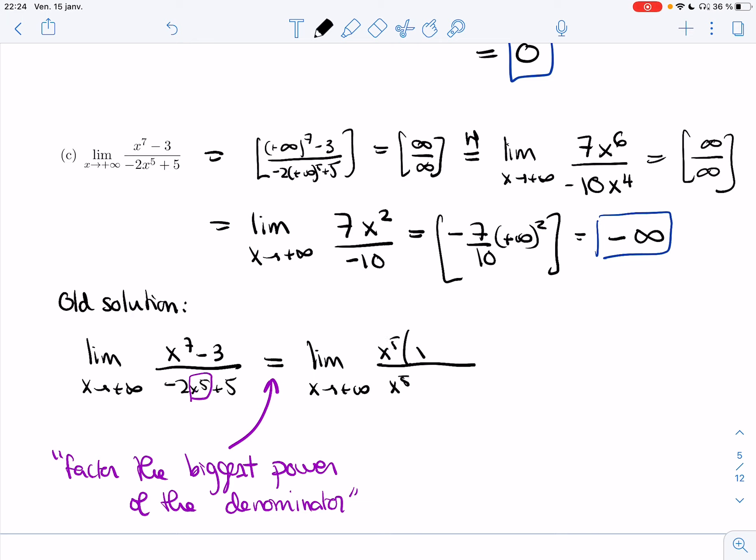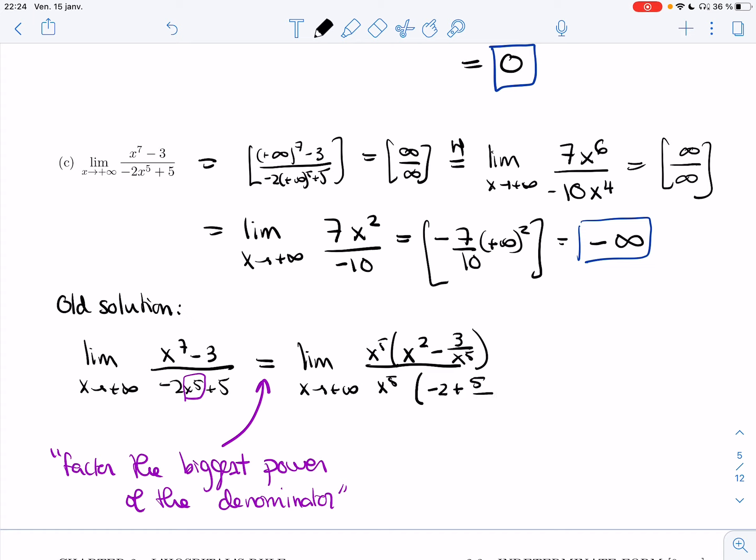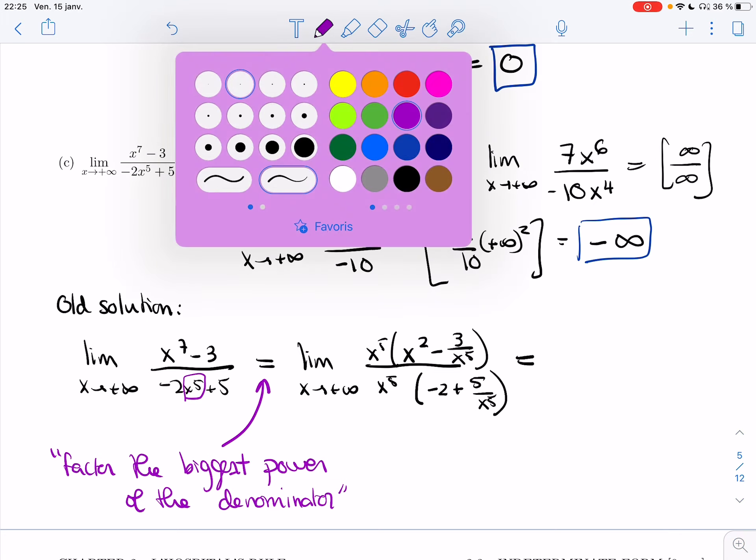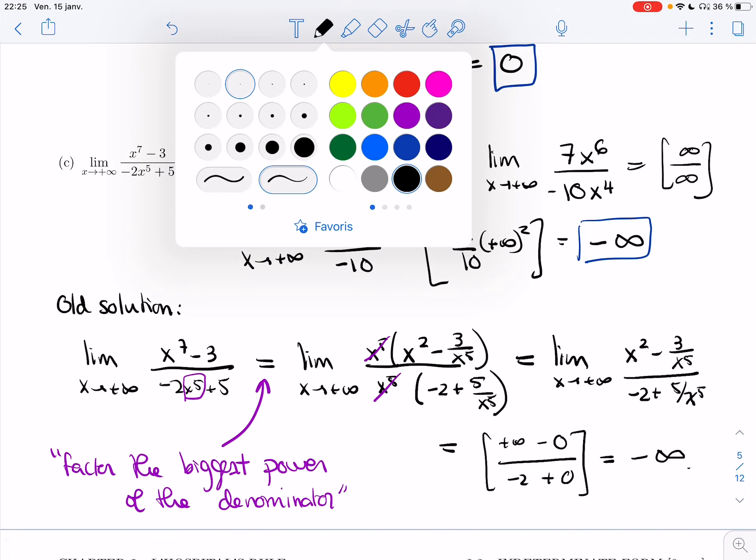I'm going to factor x to the 5 from both the numerator and the denominator. So on top, I'll have x squared minus 3 over x to the 5 left. Underneath, I'll get minus 2 plus 5 over x to the 5 left. The x to the 5 will cancel. And so what I'll have is the limit as x goes to positive infinity, x squared minus 3 over x to the 5 minus 2 plus 5 over x to the 5. And so I'm going to get positive infinity minus 0 because this one is going to be 3 over infinity. Underneath, I'm going to get minus 2 plus 0. Again, the denominator will be infinity. The top is a constant. And so I have infinity divided by minus 2. Infinity is going to be a huge number. If I divide it by minus 2, I still have a huge number. But now it's a negative huge number.